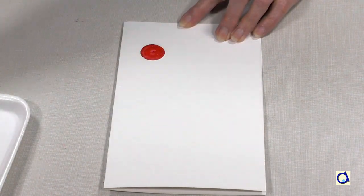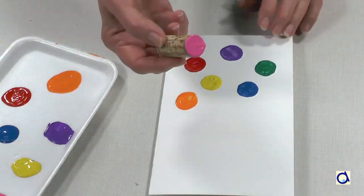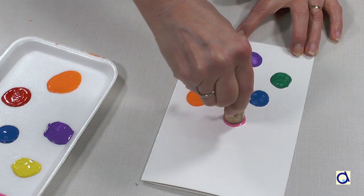Take a cork and dip it in paint and make a cork print to represent a balloon. Continue in the same way for the other balloons.